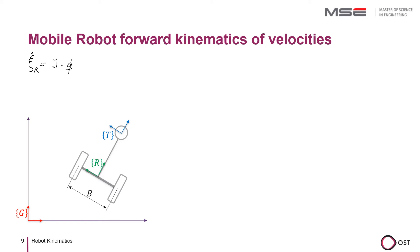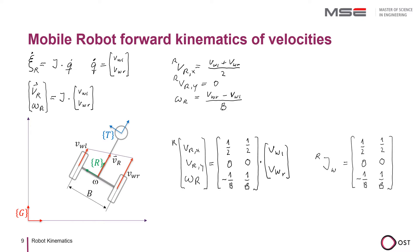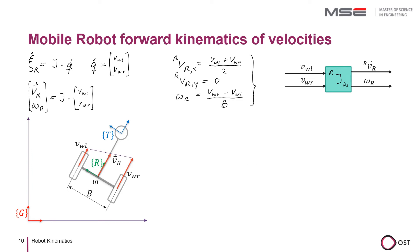Psi here represents the position in space and psi-dot the velocity. Psi-dot equals the Jacobian matrix times q-dot, and is composed of the velocity vector v and omega_z. The speed in the direction of travel is the average of the two wheel speeds. Vy in the robot system is zero because a wheel can only roll in the rolling direction. Omega is the difference between the two wheel speeds divided by the wheel distance b. We can factor out the velocities of the wheels, and thus we have found the Jacobian matrix from the wheel system to the robot coordinate system. Since we want to realize the algorithm as an EROS block, we also represent it graphically as such.